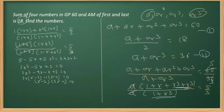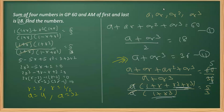We get two values of r: r = 2 and r = 1/2. Now we find the value of 'a'. Placing r = 2 in equation two gives a = 4. Placing r = 1/2 in equation two gives a = 32.